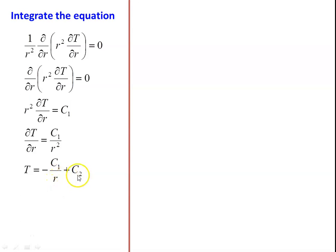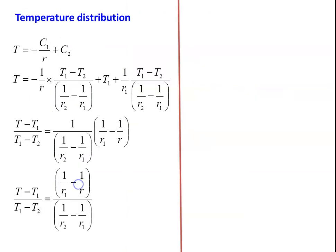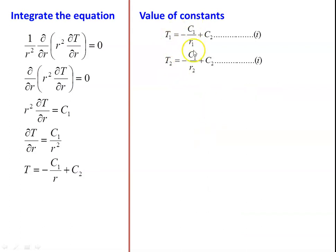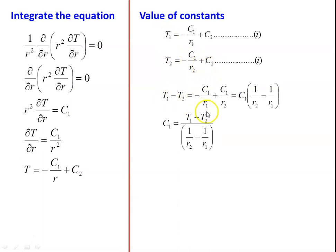Integrating again: T = −C₁/r + C₂. This is the temperature distribution equation with two constants C₁ and C₂. Applying the boundary conditions: T₁ = −C₁/r₁ + C₂ and T₂ = −C₁/r₂ + C₂. Finding T₁ − T₂, C₂ cancels, giving T₁ − T₂ = C₁(1/r₂ − 1/r₁). Therefore C₁ = (T₁ − T₂) / (1/r₂ − 1/r₁).